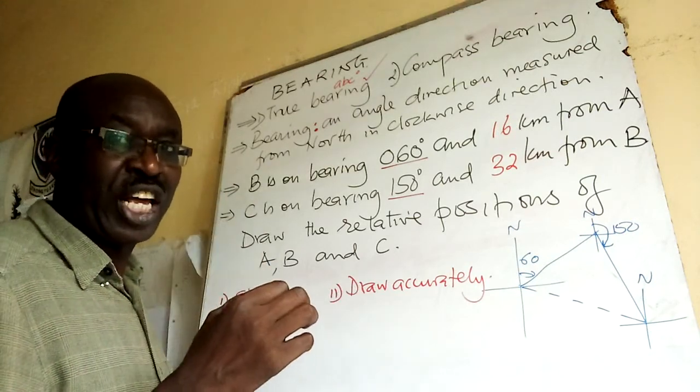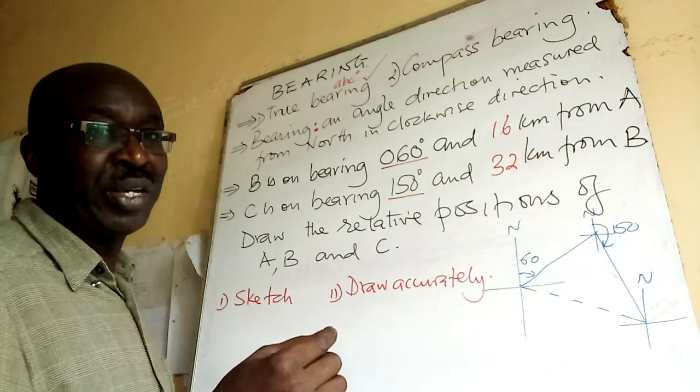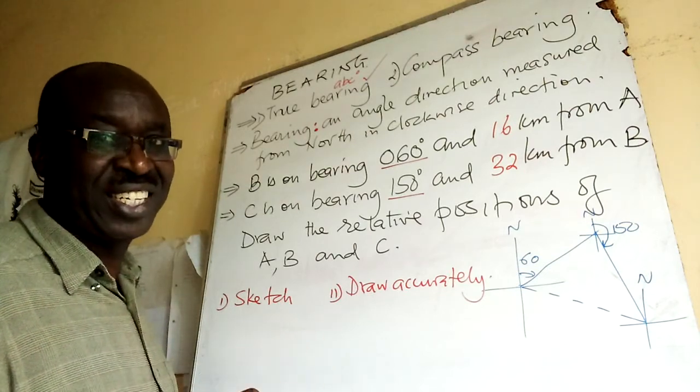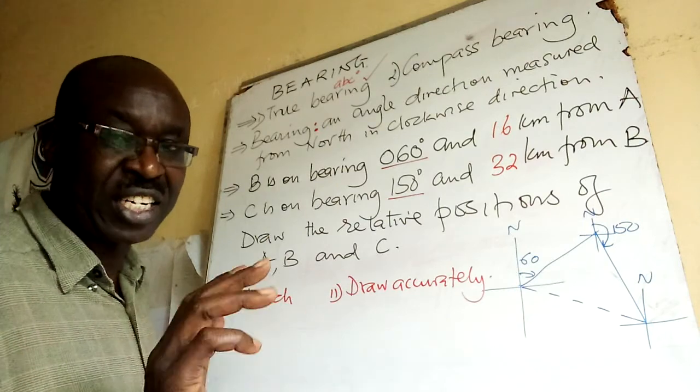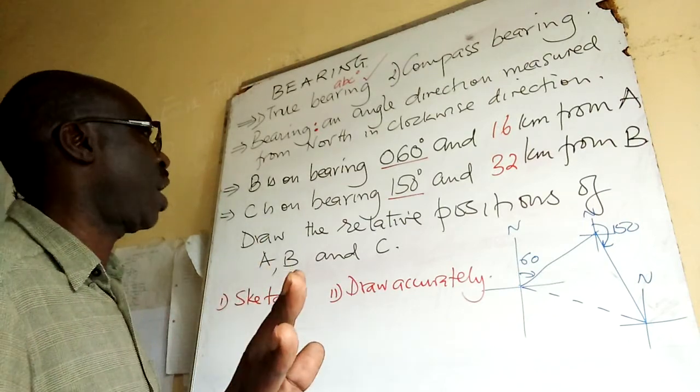So A is like 0, B is 3, C is 0. 030. We don't just write 30. Are you at home?